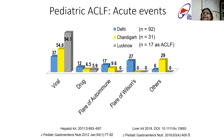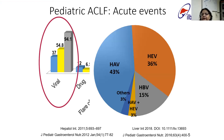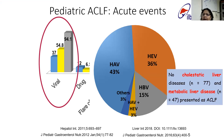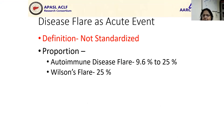As far as the acute event in pediatric ACLF is concerned, the commonest is viruses — the hepatotrophic viruses. Then comes drugs as well as flares of the underlying disease. Whether it's autoimmune or Wilson's, the flare of the disease has also been seen very commonly as an acute event. Among the viruses, the commonest has been seen to be HEV.